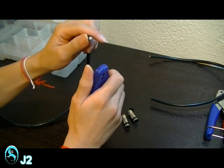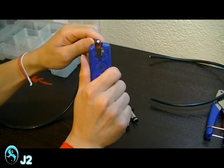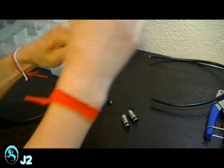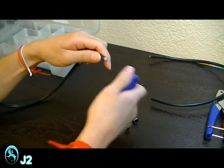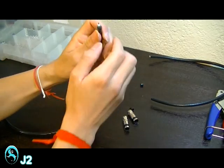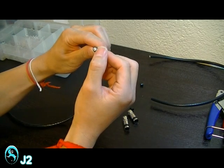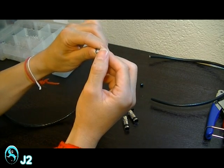And strip another 1/4 inch only from the outer jacket. And now I'm going to flare and fold the braid shell back from the dielectric.